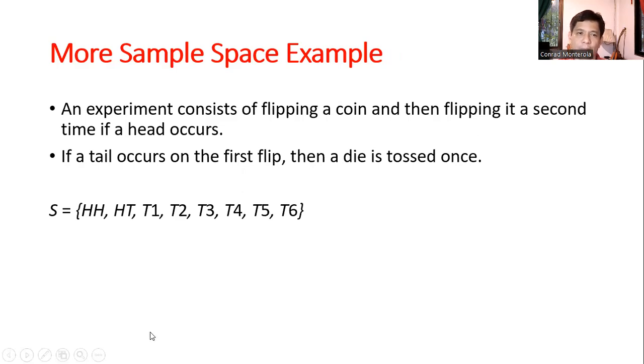So we have more complex example. We have an experiment, consists of first part, flipping a coin, and then flipping it a second time if a head occurs. So for example, you flip a coin and then head, and then you need to flip it again. And then if the tail occurs, so instead of flipping a coin, you need to toss a die once. So these are the possible outcome. Head, head, tail, or HH, head, tail, or HT, tail 1, tail 2, tail 3, tail 4, tail 5, tail 6.